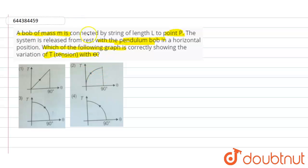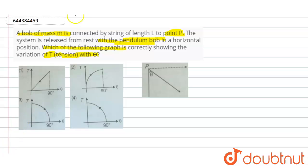If you look into these particular options, all these are graphs drawn between tension versus theta angle. Here it's saying that a bob of mass m is connected to a string of length capital L to the point P.